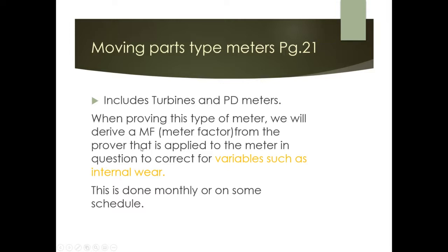When proving moving-parts meters, we derive a meter factor from the prover and apply it to the meter in question. The purpose is to correct for variables such as internal wear, dimensional changes, and leakage. The meter is verified against something more accurate, the error is determined, and a meter factor is applied. This is typically done monthly, semi-annually, or annually on a schedule.